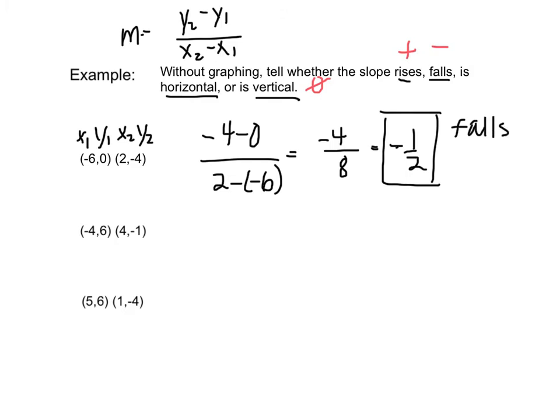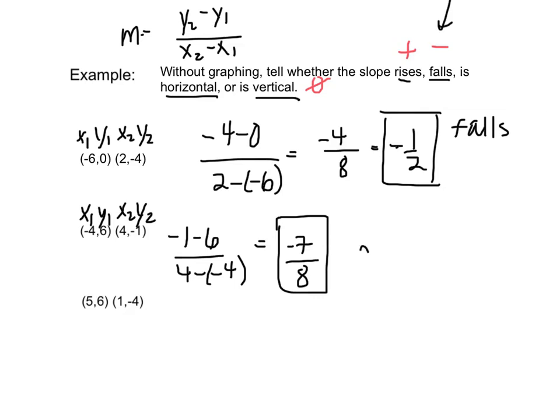We're going to go through the same process for each of the remaining values. Once again, we plug into our already known slope formula with our values, so negative 1 minus 6, 4 minus negative 4. Once again, our slope is negative, and it therefore falls.